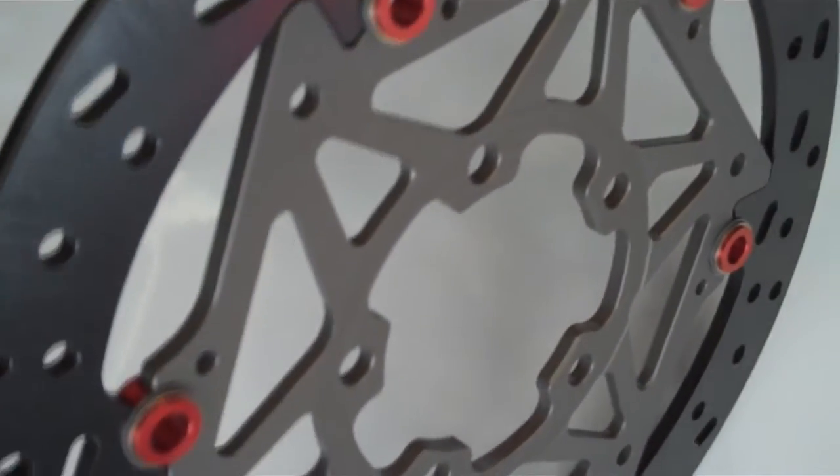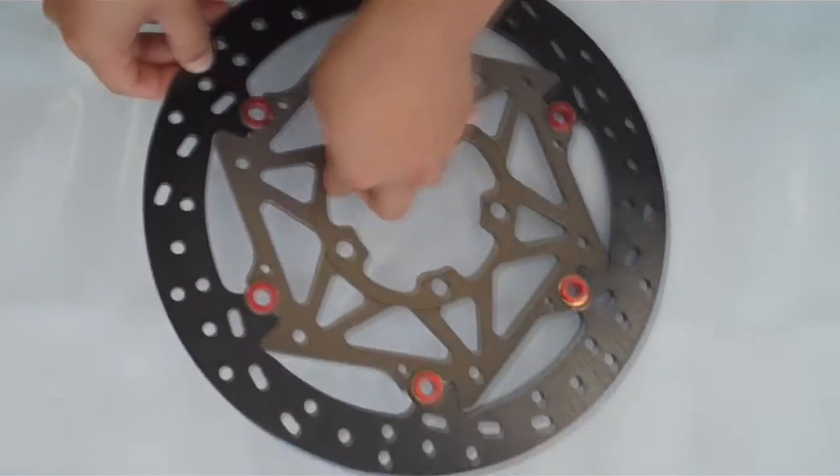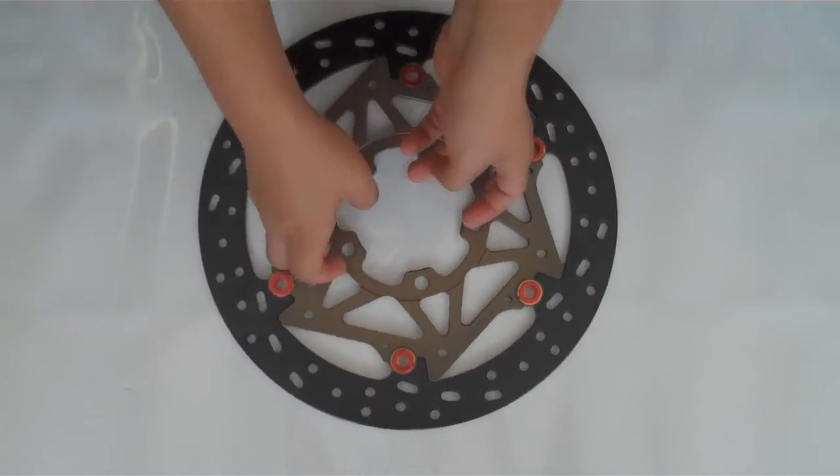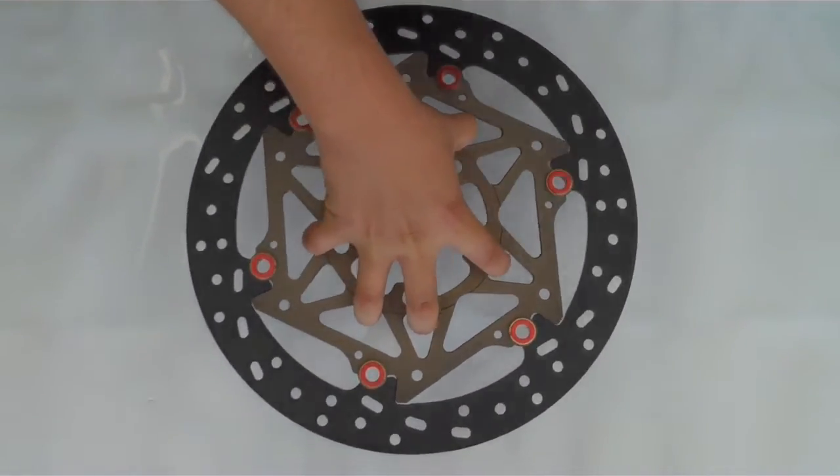What is full floating and semi-floating? Well, true full floating rotors move on the carriers. This allows them to self-center in the caliper for reduced brake drag and float unimpeded for unrestricted expansion and contraction.